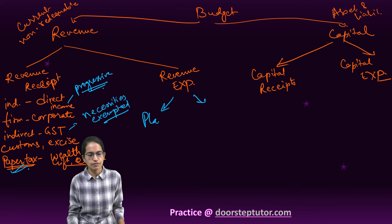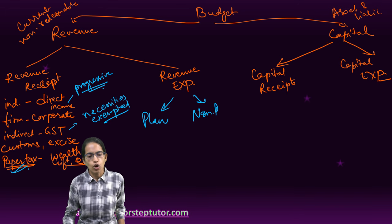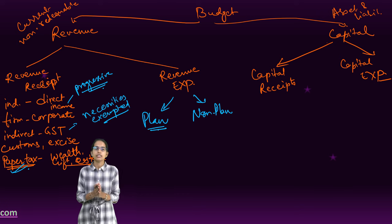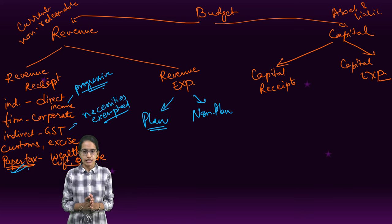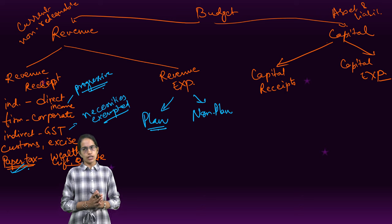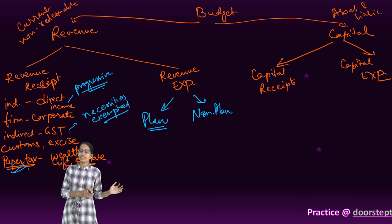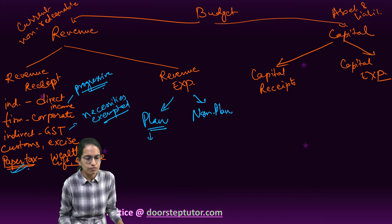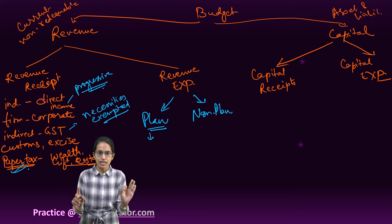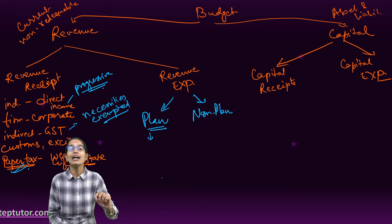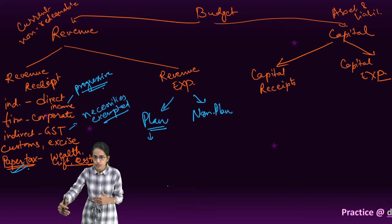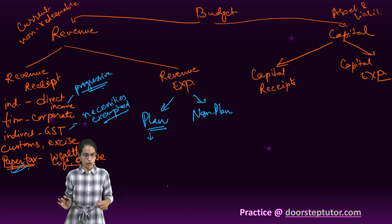Revenue expenditure can be classified as planned expenditure or non-plan expenditure. Plan expenditure is central expenditure by the central government — it could be the centre's assistance to states or union territories, including five-year plans. Anything well designed and well articulated — what you plan to spend at the centre, state, union, or plan level — goes under plan revenue expenditure.